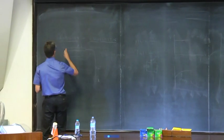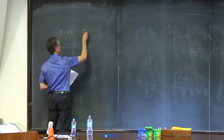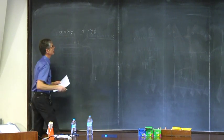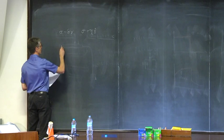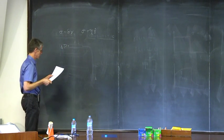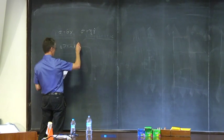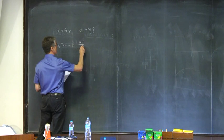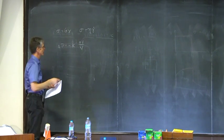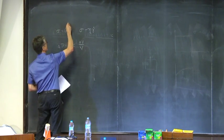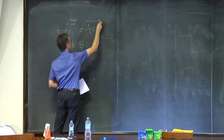We defined the shear modulus G by the relation stress = G·γ, the shear viscosity η by stress = η·γ̇, and the bulk modulus K by the relation for isotropic pressure applied to a material: K = −P/(ΔV/V), where the minus sign ensures a positive K since positive pressure gives negative volume change.